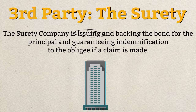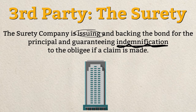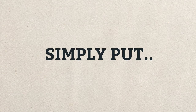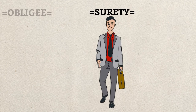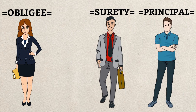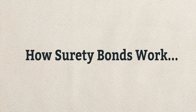Third party: the surety. The surety company issues and backs the bond for the principal, guaranteeing indemnification to the obligee if a claim is made. Simply put, the surety guarantees to the obligee that the principal can perform the task.